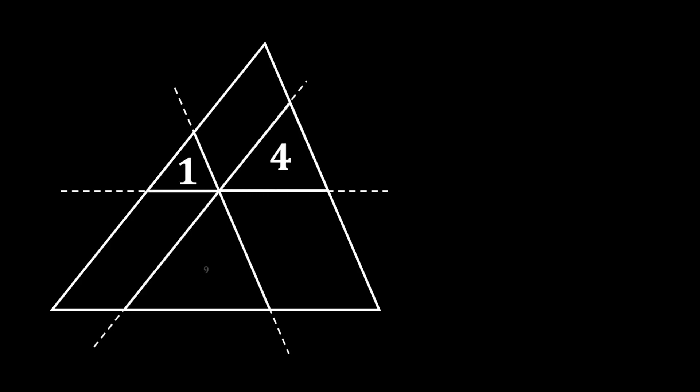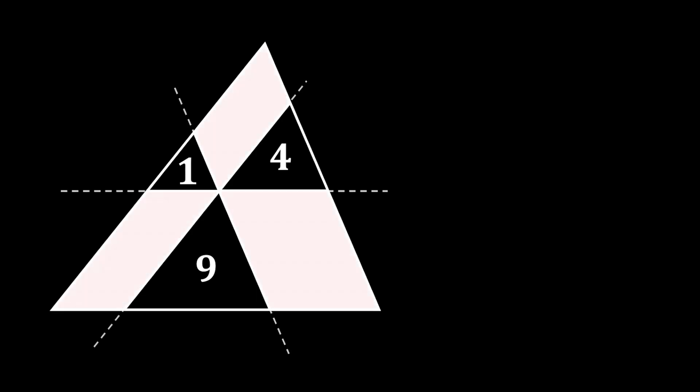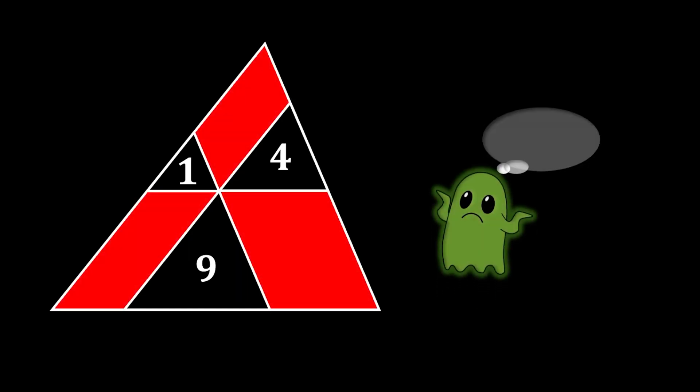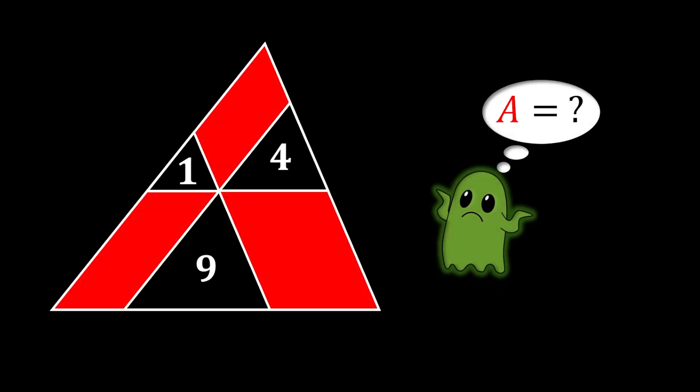The three inscribed triangles have areas of 1, 4, and 9. The question is: is it possible for us to find this red shaded area using only the areas of these three inscribed triangles? If you want to try this interesting problem for yourself, you can pause the video right now and then come back and check your solution.